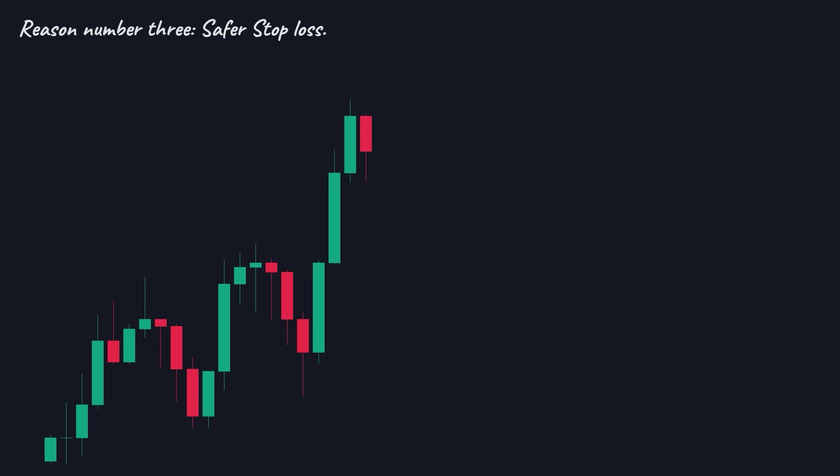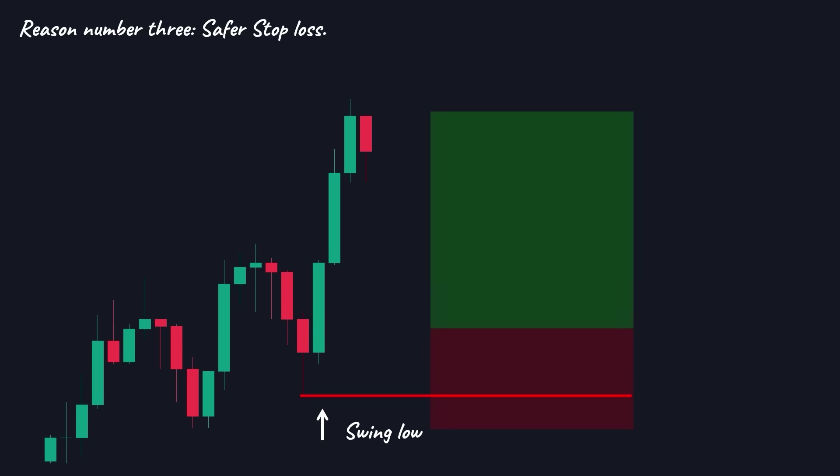Reason number three: safer stop. The best price level to set our stop loss to be safe from market fluctuations is below this swing low, because if the price breaks through this level, we will have a market structure shift. So the bulls will do their best to support this level. Therefore, the closer your stop is to this level, the safer it is. This was the third reason why we enter trades in the discount zone.